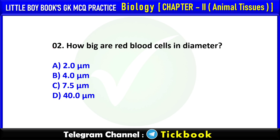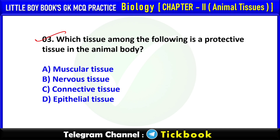Q2. How big are red blood cells in diameter? 7.5 micrometers. Q3. Which tissue among the following is a protective tissue in the animal body? Option number D is the correct answer: epithelial tissue.